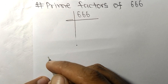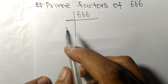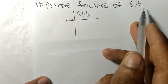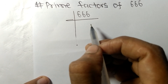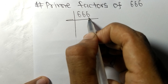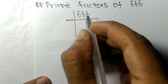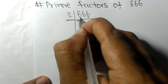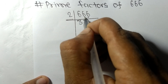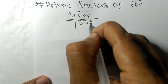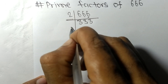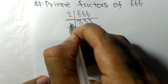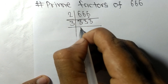Today in this video we shall learn to find the prime factors of 666. Since it contains the even number 6, the whole number is divisible by 2. 2 times 3 means 6, and dividing 666 by 2 gives us 333, which is exactly divisible by 3.